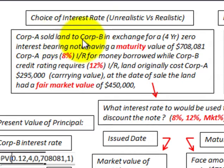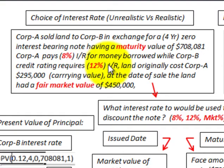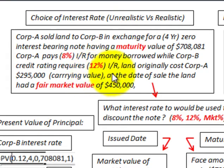Corporation A sold land to Corporation B in exchange for a four-year zero interest bearing note having a maturity value of $708,081. Corporation A pays 8% interest for the money they normally borrow, while Corporation B, with their credit rating, requires a 12% interest rate on money they borrow. The land originally cost Corporation A $295,000, which is its current carrying value, and at the date of the sale, the land had a fair market value of $450,000.